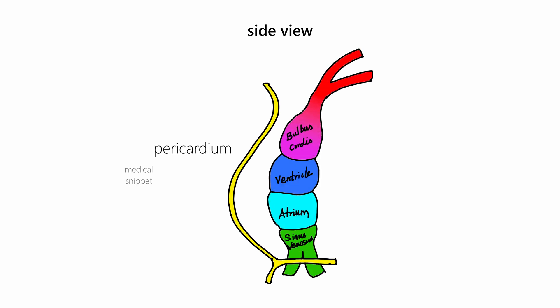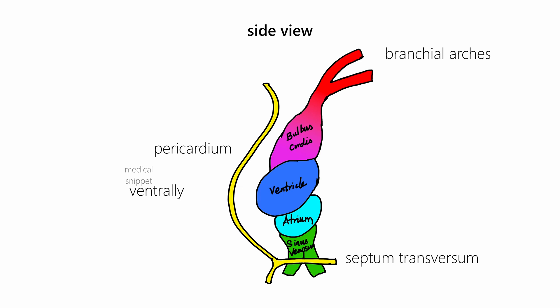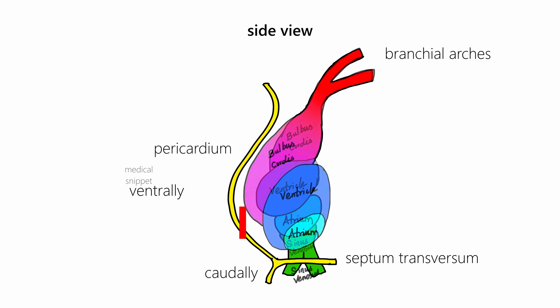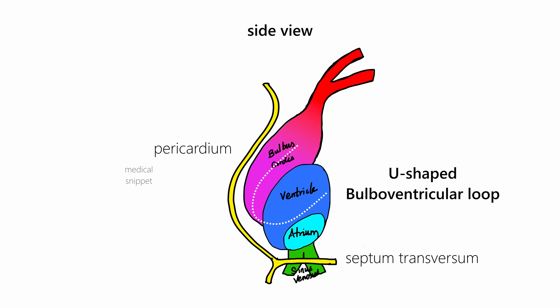During development, the bulboventricular part grows faster, and as the ends of the heart tubes are fixed to the surrounding tissue outside the pericardial cavity — the arterial end is fixed to the branchial arches and the venous end to the septum transversum — elongation cannot take place in a longitudinal direction. So the heart tube bends on itself ventrally, caudally, and slightly towards the right side, forming the U-shaped bulboventricular loop.